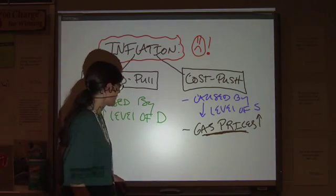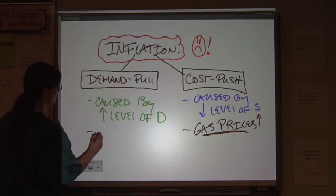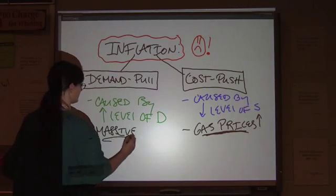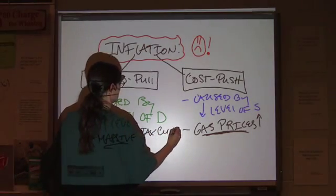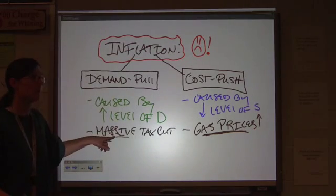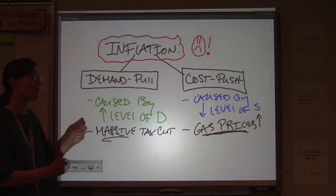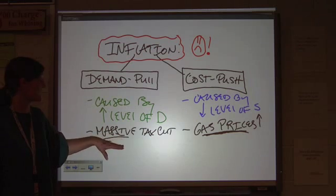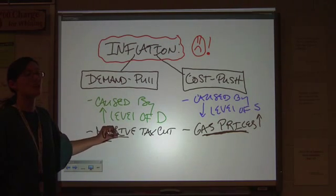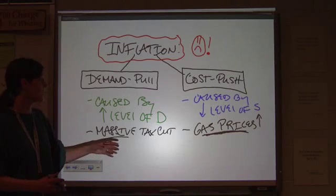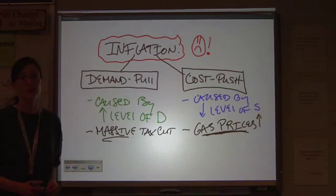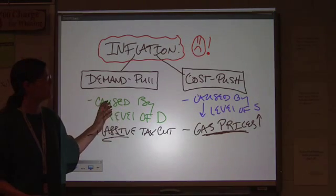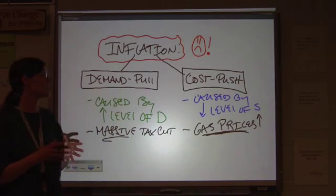So the example that we saw for demand pull would be that massive tax cut. And a lot of people have not necessarily been behind keeping the Bush tax cuts permanent or they've been absolutely against it. One of the dangers in a permanent tax cut is that it can spur demand pull inflation. When we're in the midst of a recession, however, that seems unlikely. But those are two possibilities. Those are your only two types of inflation.